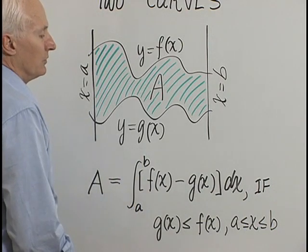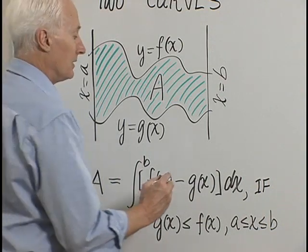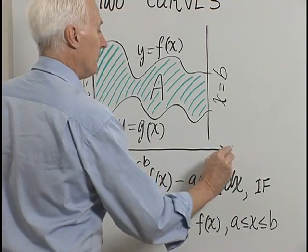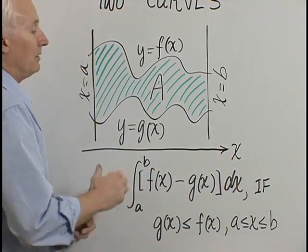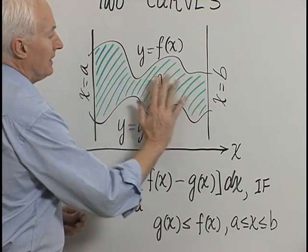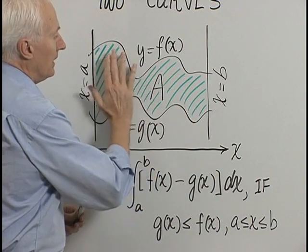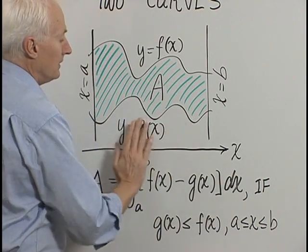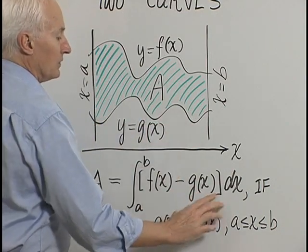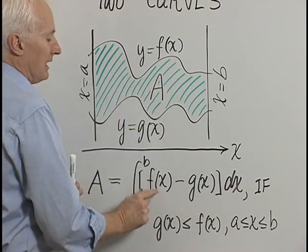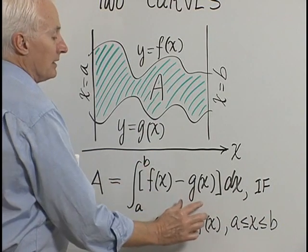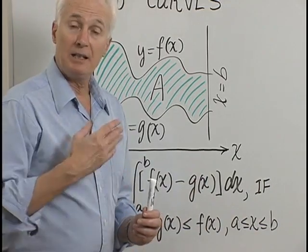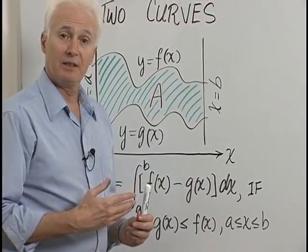It's not hard to see why this is true, because remember, the definite integral of a function gives you the area under the curve if it's always above the x-axis. So if I provisionally put in an x-axis below the graph of g, you can easily see that the area between the two curves is the area under the graph of f — the definite integral of f of x alone — minus the area under g, which is the definite integral of g of x dx. The definite integral of f minus the definite integral of g is the same as the definite integral of f minus g.